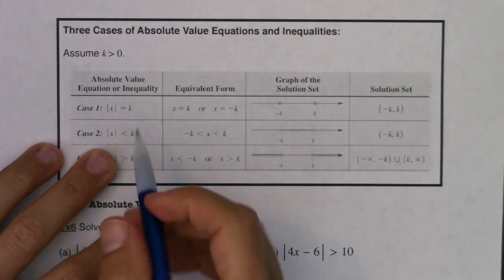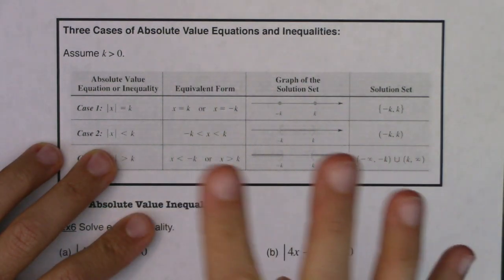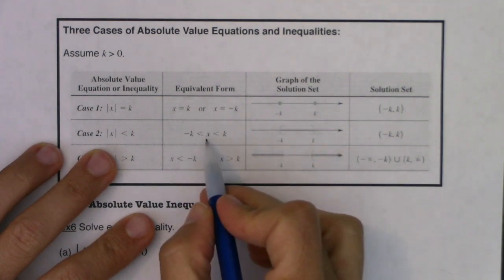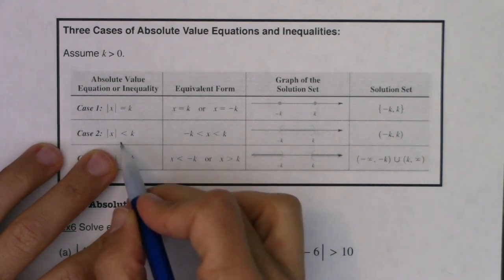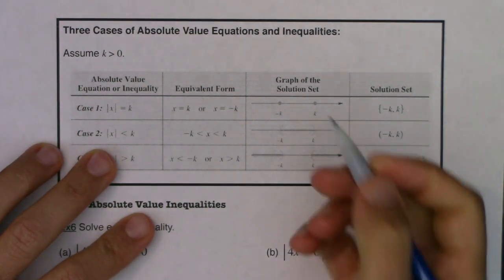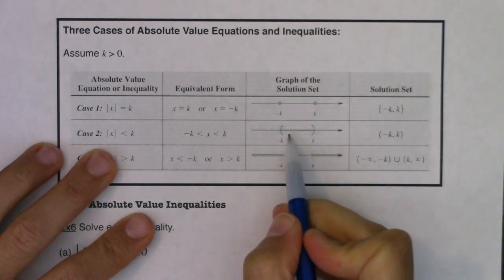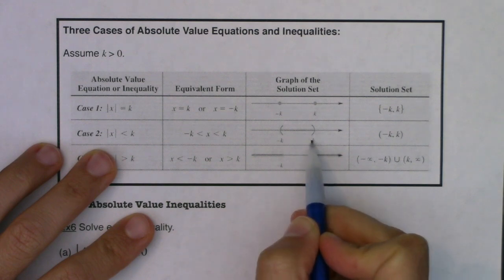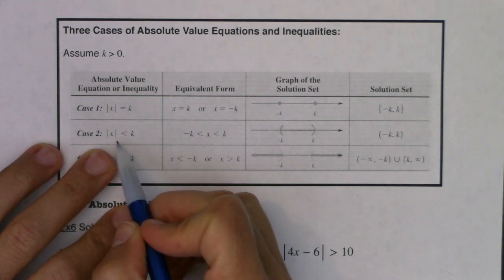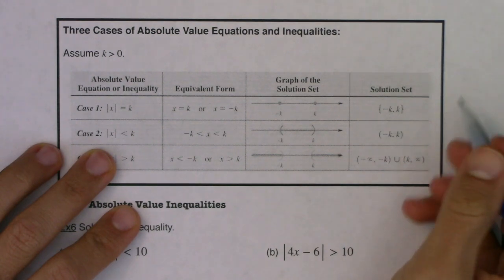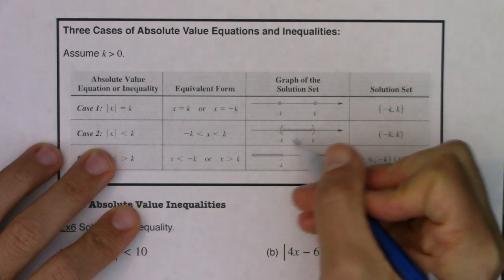Now for case two: you have your absolute value expression isolated but with the less than symbol. When you have that, you set up a three-part inequality where x is wedged between negative k and k. If graphed, it goes from negative k to k. You write that in parentheses since we used a strict less than — if it were less than or equal to, you'd use brackets. Shade that part of the number line, going low to high.